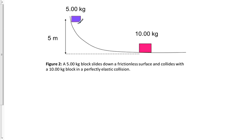In this question, we have a 5-kilogram block that will slide down a surface that has no friction. It will collide with the 10-kilogram box here. It's going to bounce back this way up, probably not quite as far as it was initially, and then cause this one to move off to the right.